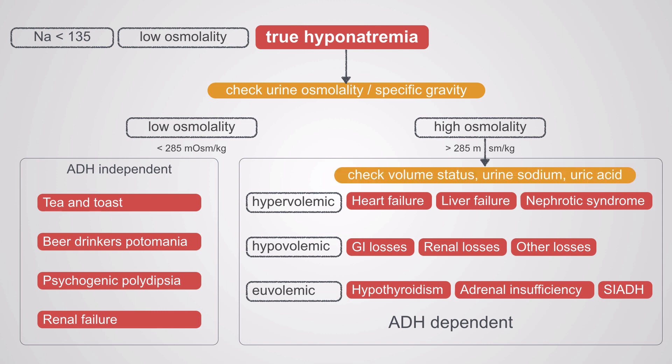You want to measure the urine sodium and the serum uric acid. Hypervolemic patients will have a urine sodium less than 20 and a high uric acid — it may not be frankly high, but it will be towards the upper range of normal. Hypovolemic patients will also have a urine sodium less than 20 and a high or high-normal uric acid. Euvolemic patients will have a urine sodium greater than 20 and a low uric acid.